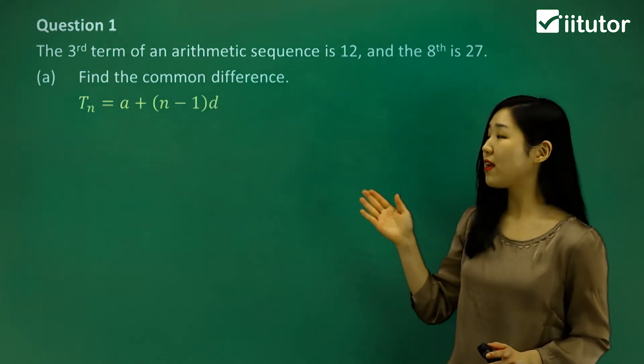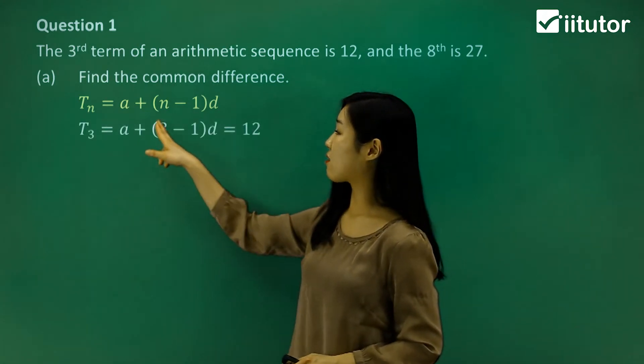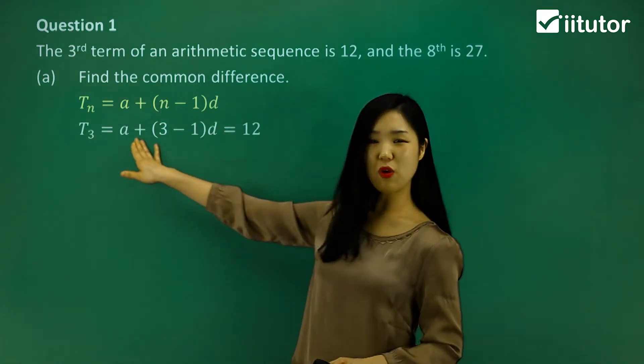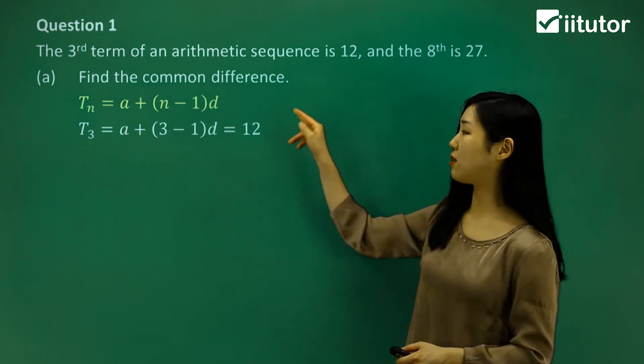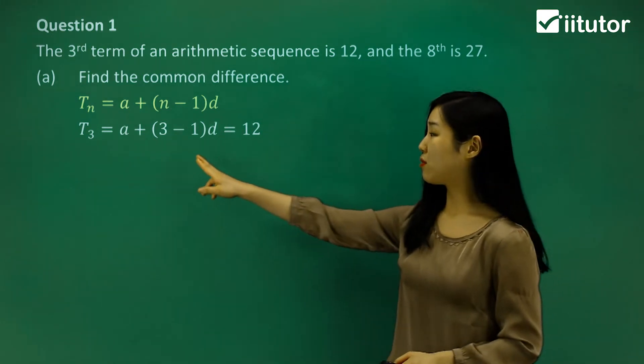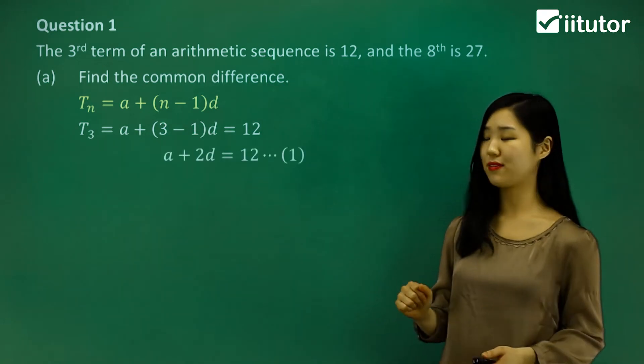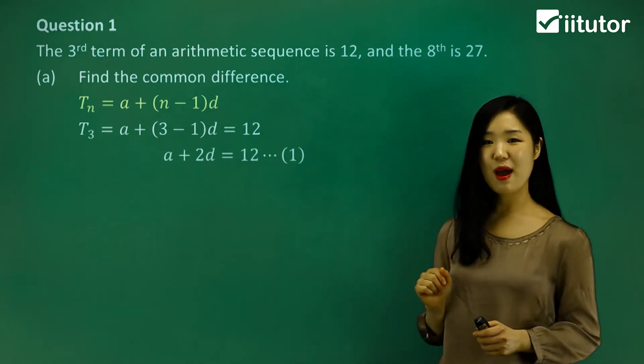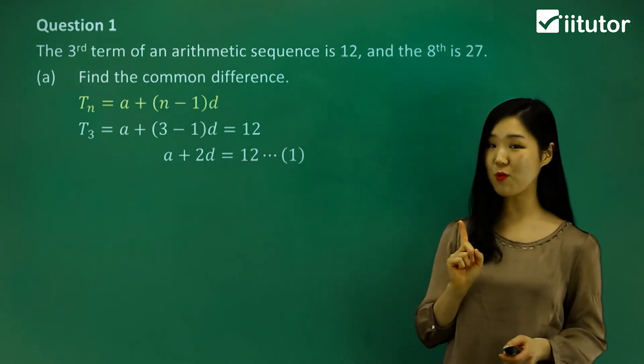They tell us the third term is 12, which means n would be 3 in this case, so I replace n with 3. We don't know what a and d are, so I'll just leave them as unknown, and they tell us it equals 12. Let's simplify. 3 minus 1 is 2, so a plus 2d equals 12. I'm going to label that equation 1.